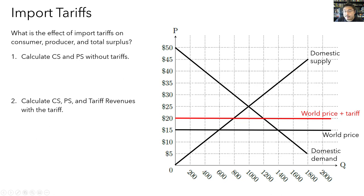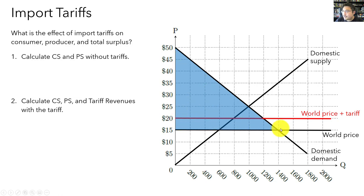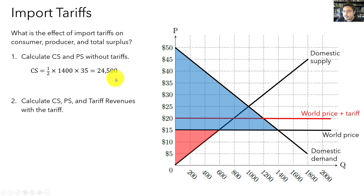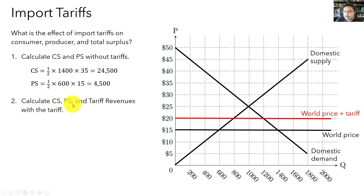Now let's analyze the effect of the tariff on consumer and producer surplus and on total surplus. First, consumer and producer surplus without the tariff: consumer surplus equals the area below the demand curve and above the world price up to quantity consumed, which is $24,500. Producer surplus equals the area above the supply curve and below the world price up to quantity produced, which is $4,500. There is no tariff revenue before the tariff.